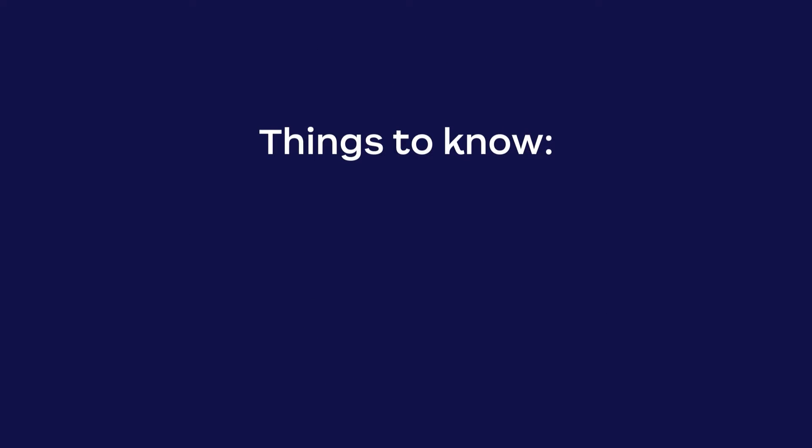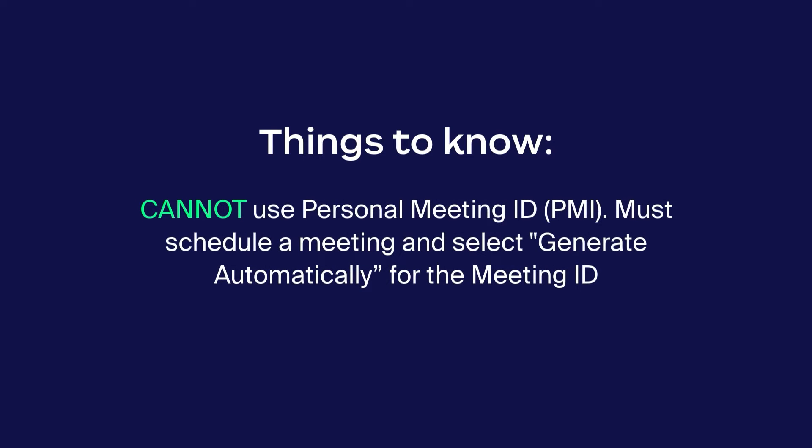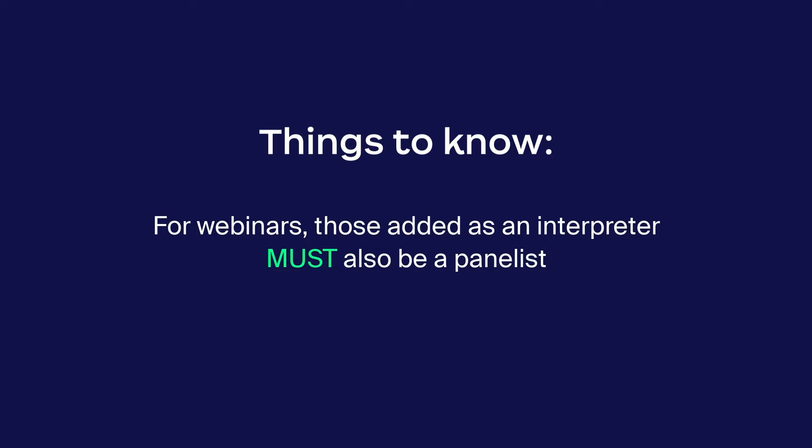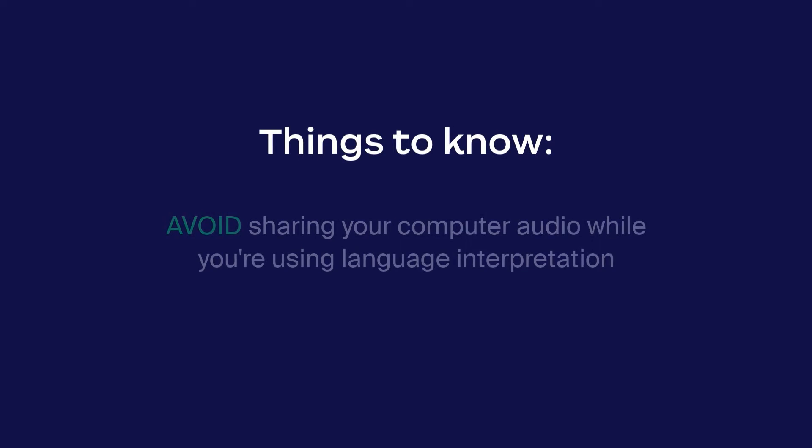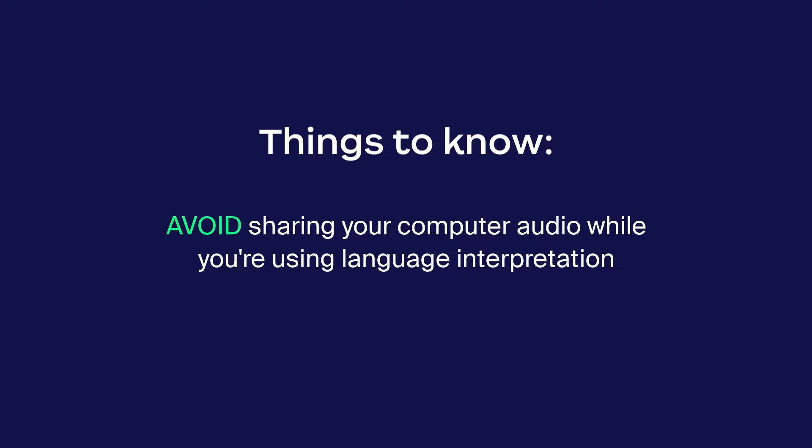Before we begin, here are some things to know about language interpretation. Language interpretation cannot be used in meetings using your PMI, or personal meeting ID, nor can it be used in instant meetings. It can only be used in scheduled meetings where you have selected Generate Automatically for the meeting ID. For webinars, those added as an interpreter must also be a panelist. We recommend avoiding sharing your computer audio while using language interpretation, as the computer audio will broadcast at full volume, causing some audio imbalance.